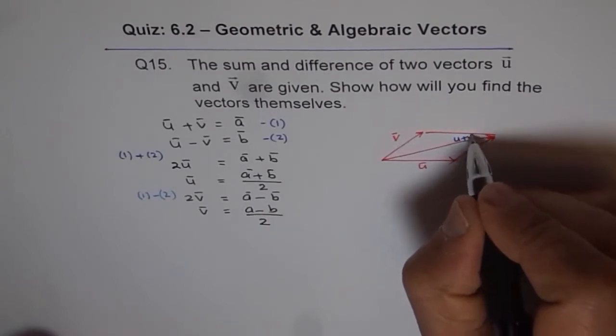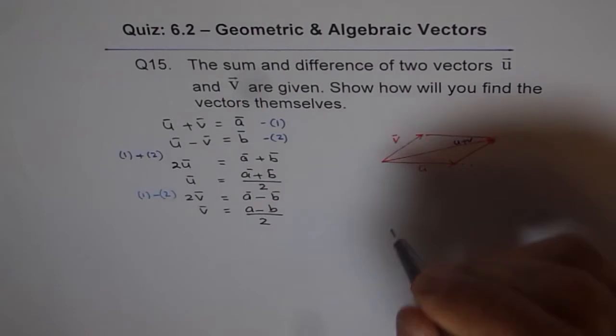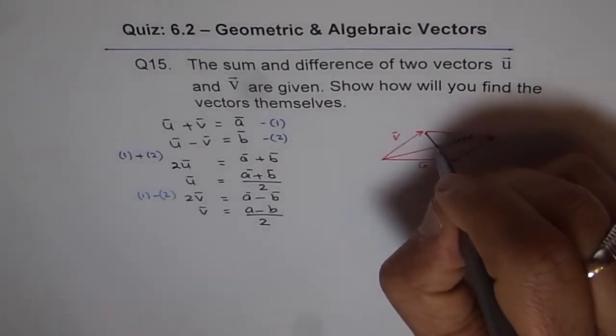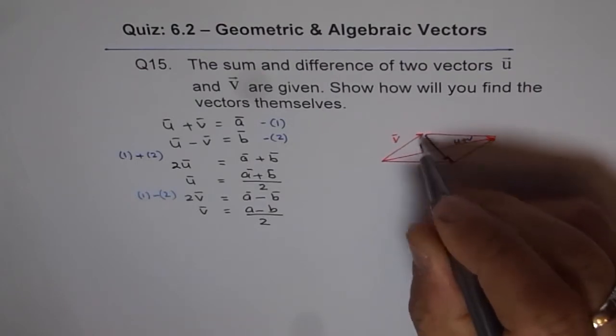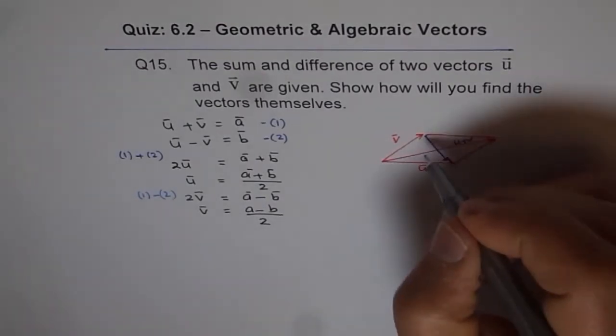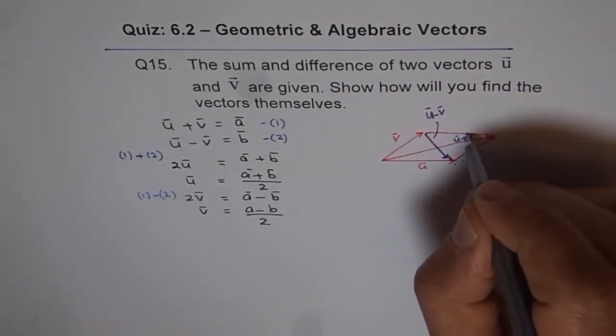This is u plus v. Now to get u minus v, what do we do? The other diagonal gives us u minus v. So if I have this diagonal here, that is u minus v. So this diagonal here is u minus v vector. That is how.